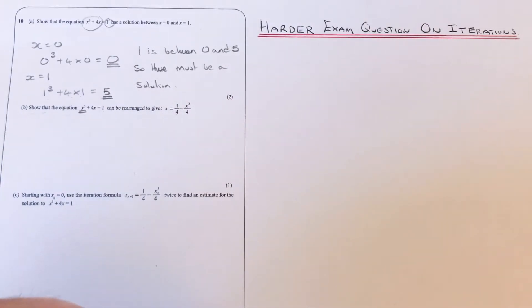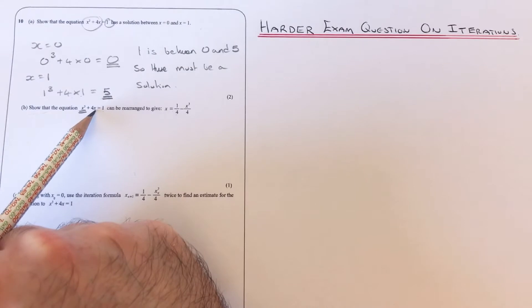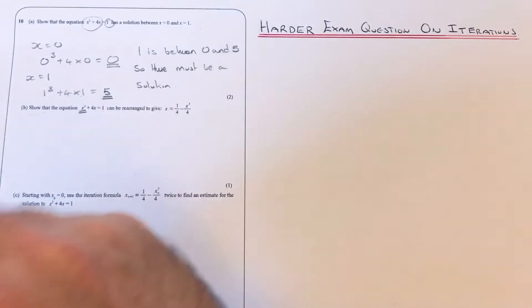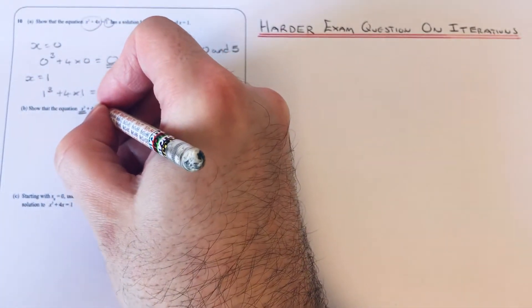Okay, so let's have a look at part B. We've got to show that the equation x³ + 4x = 1 can be arranged to give x = ¼ - x³/4. Now what they've done here, they've made one of the x's the subject of the formula. I think the x that they've made the subject is this one here.